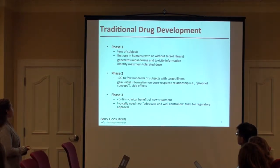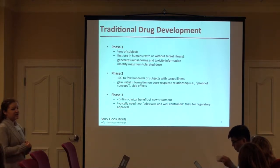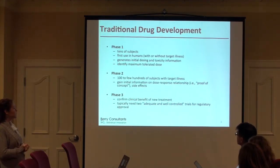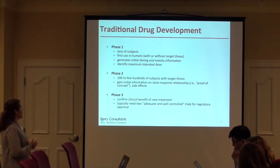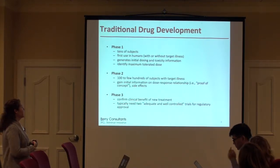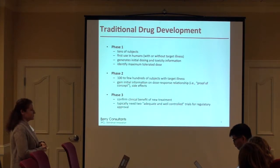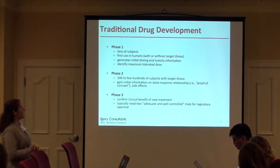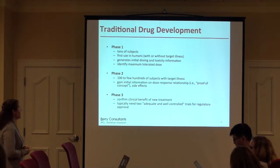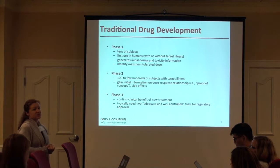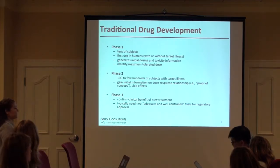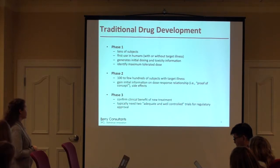Diving in a little bit more to what the drug development process looks like. In phase one, these are typically your first-in-human studies. A lot of times these are healthy volunteers who don't actually have the disease that you're ultimately targeting for your drug. In some indications, especially oncology, you do typically enroll patients in phase one, but in a lot of other therapeutic areas these are patients who do not have the disease. In phase one, we're also talking about really small trials — 20 to 30 subjects. The goal is to gain some initial understanding about the dose, toxicity issues, safety issues, and to identify the maximum tolerated dose and the dose range to carry forward.